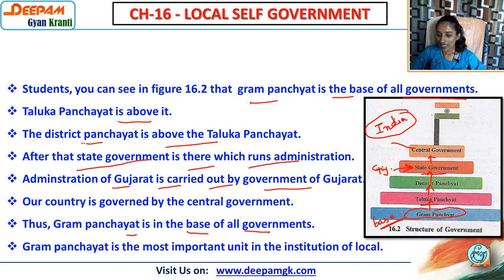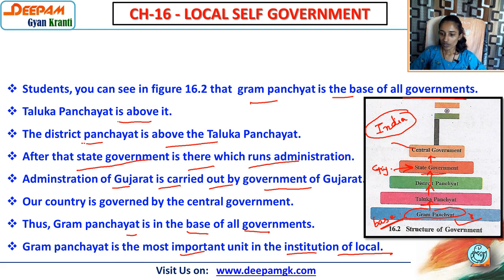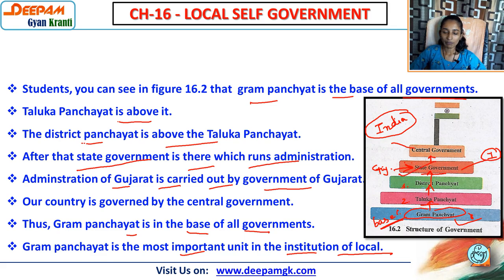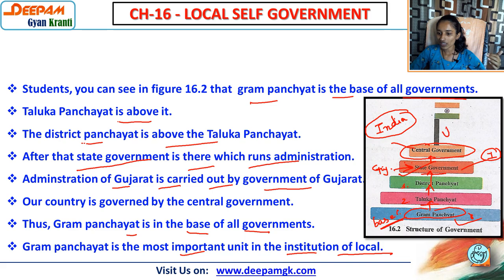Gram panchayat is the base and the most important unit in local administration. From lower to upper level: gram panchayat, then taluka panchayat, then district, then state government. Each particular state has one government - Gujarat has Gujarat government, Rajasthan has Rajasthan government. Above the state government is the central or union government from New Delhi. For the central government we have the Prime Minister; for state government we have the Chief Minister.